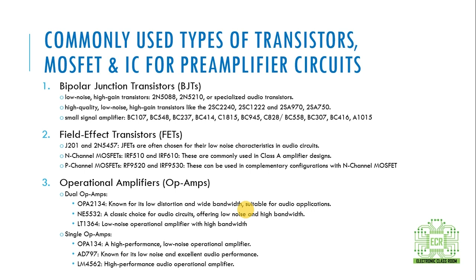This is the small signal amplifier transistor. This is the BJT. This is the FET — field effect transistors. This is the low noise audio circuit. This is the N-channel MOSFET. This is the P-channel MOSFET. This is the complementary configuration.